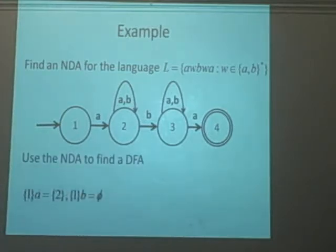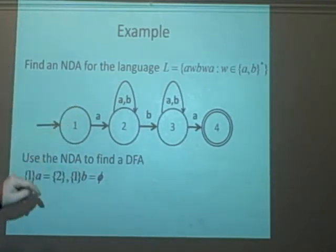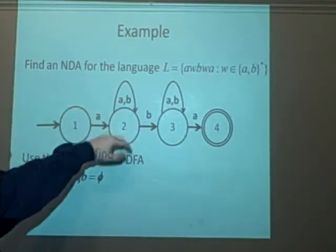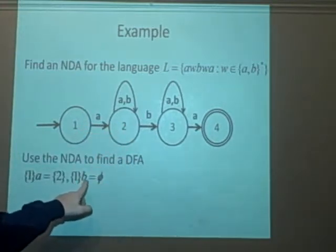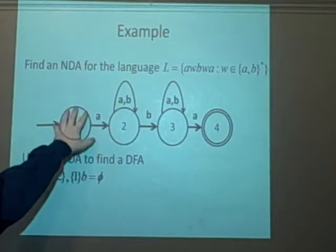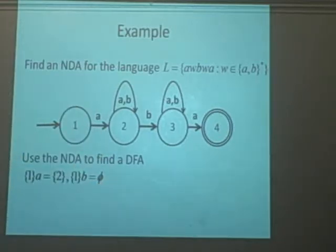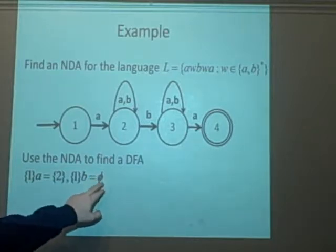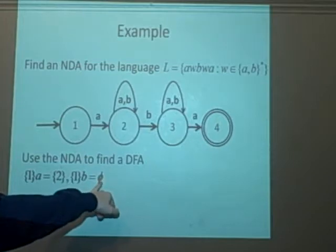Now we want to find the DFA of it. Like I say, we start with the first initial state, 1, and we apply A and see what happens. We get 2. If we apply B, then it doesn't go anywhere. So it's just an empty set. So that's another state. And if you want, you can apply A and B to the empty set, but you'll just get the empty set. So this is a new state we found.